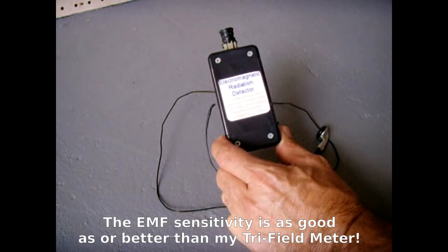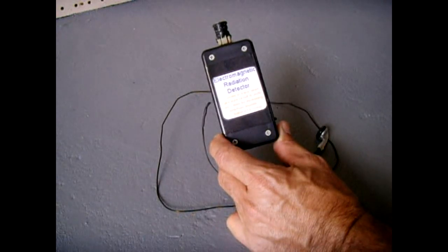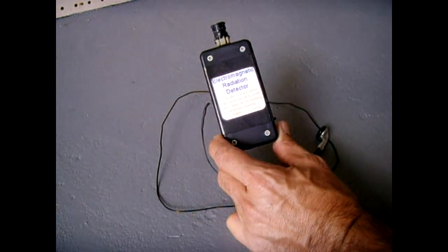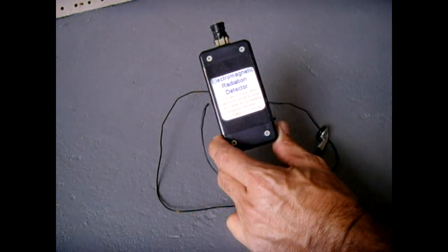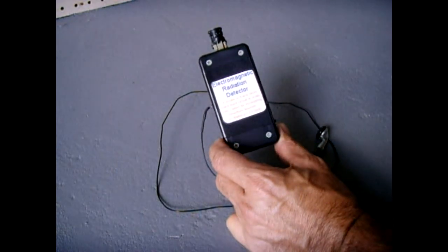The main purpose that I use this for is for tracing 120 volt or 240 volt electrical wiring inside of walls or even under floors. How this is able to do that, you have this sensor at the end which is a 1 millihenry inductor.